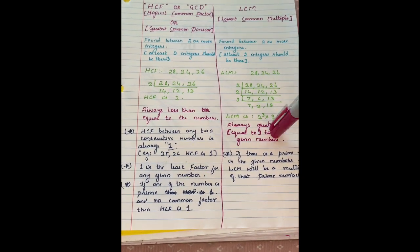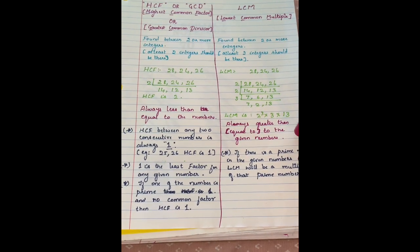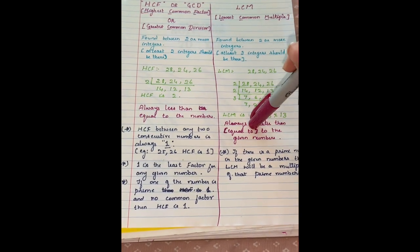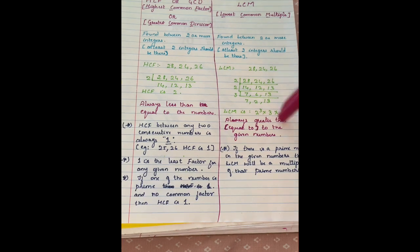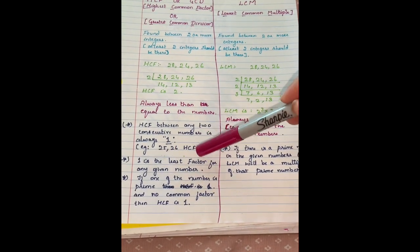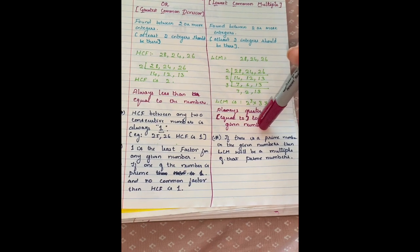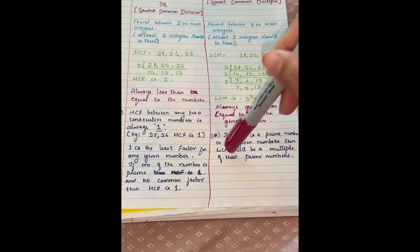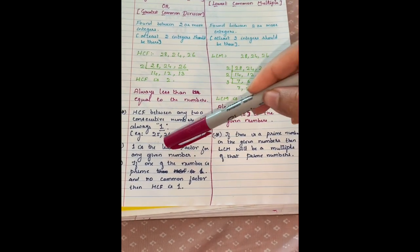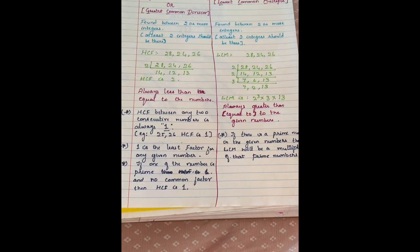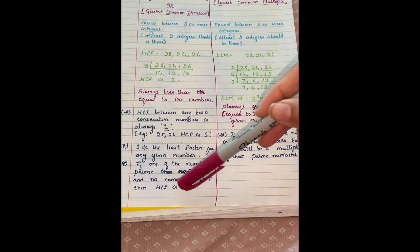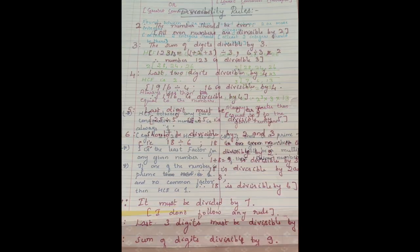LCM of any two consecutive integers is the product of those integers. One is the least factor for any given number. If there is a prime number in the given numbers, then LCM will be a multiple of the prime number. If one of the numbers is prime and has no common factor, then HCF is 1.